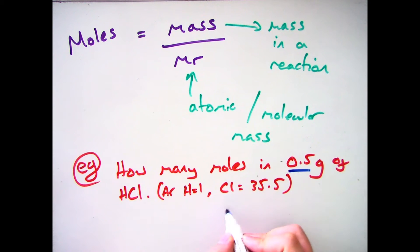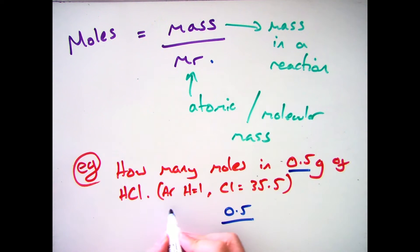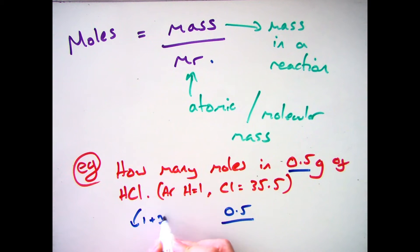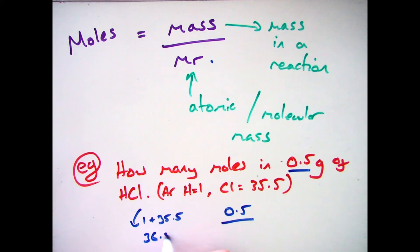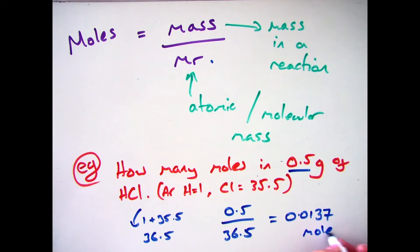So if you had a question that said 'how many moles are in 0.5 grams of hydrochloric acid?', the first thing you need to do is divide 0.5 by your molecular mass. We've got one hydrogen and one chlorine, so the total mass is 36.5. So the moles is 0.5 divided by 36.5, which gives an answer of 0.0137 moles.